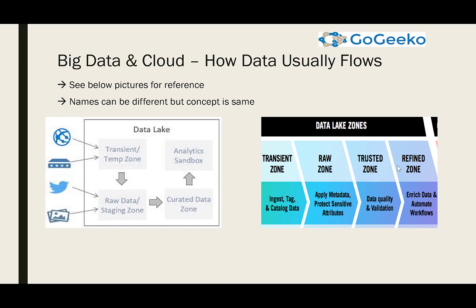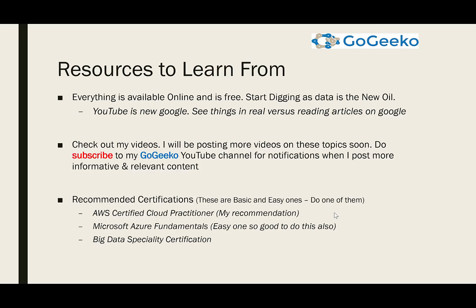Data flows from transient zone to raw to trusted or refined zone. You can use whatever terminology you prefer, but from my experience, raw zone, refined zone, and curated zone are very common names in cloud and big data lakes. Now, for resources to learn all of this — everything is available online and it's free. Start digging. As data is the new oil, YouTube is the new Google. Watch things in real versus reading articles, but if you're comfortable reading, definitely use Google too.